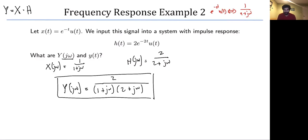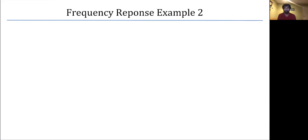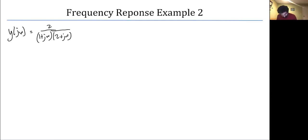That was pretty simple. Now, lowercase y is the inverse Fourier transform of capital Y. To simplify, we use partial fractions: 2 over (1 plus j omega)(2 plus j omega) equals A over (1 plus j omega) plus B over (2 plus j omega), converting back from common denominator form. We need to determine what A and B are.